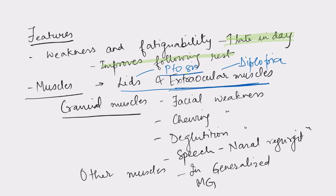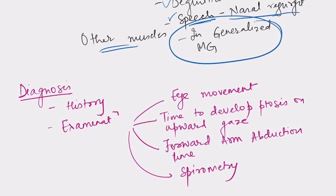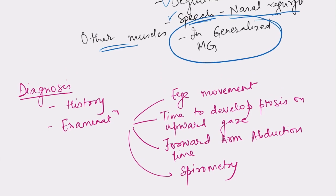There are also features suggesting involvement of other cranial muscles — muscles supplied by cranial nerves. There will be facial weakness, chewing weakness, problems in deglutition, and in speech there may be nasal regurgitation and a nasal twang. In generalized myasthenia gravis, other muscles may also be affected. Very importantly, if respiratory muscles are affected, respiratory assistance may be required — this is known as a crisis in myasthenia gravis.